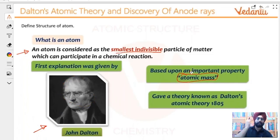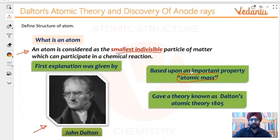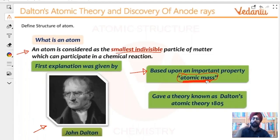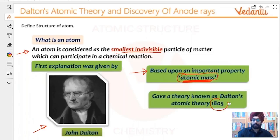At that time, electrons, protons, neutrons, the concept of atomic number was not known. So all you could do is measure some weight of something. That is why all of those properties in those times were based mainly on atomic masses. Dalton's theory uses the atomic mass in a very significant manner. And this theory was given in 1805, even before Dobereiner's triads, which were around the 1830s.